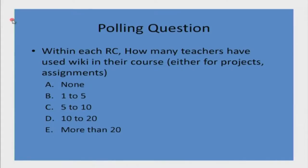I have given five options: none, 1 to 5, 5 to 10, 10 to 20, and more than 20, since some remote centers have 30 to 40 participants. You can choose the appropriate option once the poll is up and we will see the graph. The polling has been started — just take a rough count.